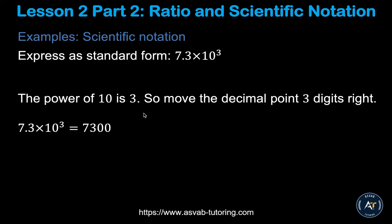Now let's learn how to convert scientific notation back into standard form. Take 3.7 times 10 to the third power. The exponent 3 means there should be three digits after the decimal point. Count one, two, three — and if you don't have enough digits, fill in with zeros to complete the standard form number.